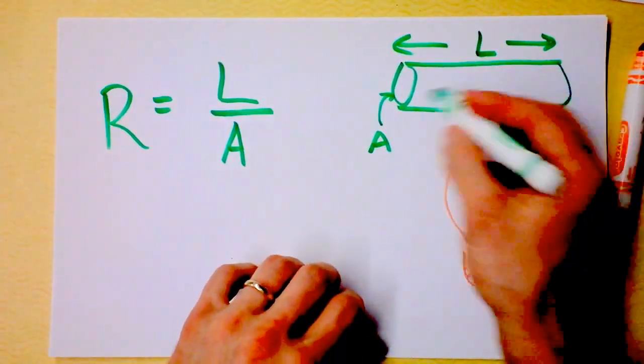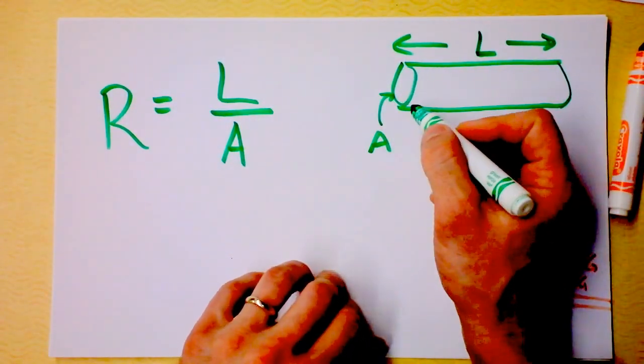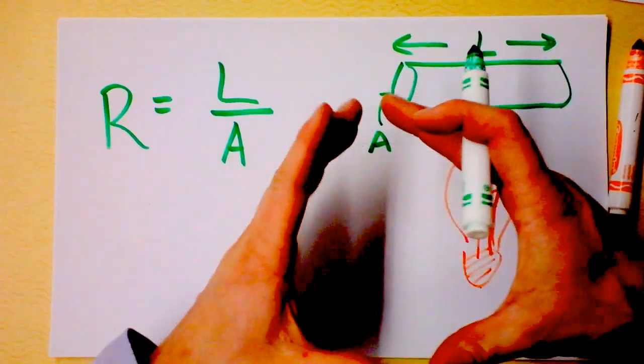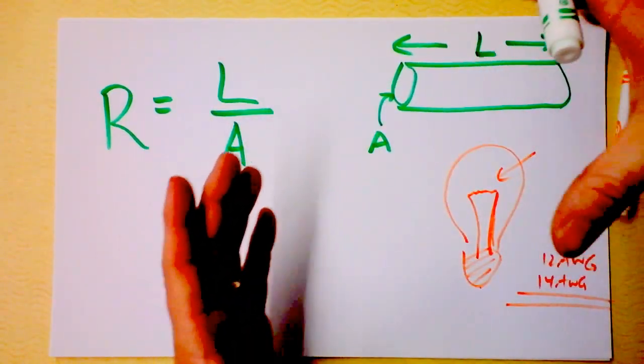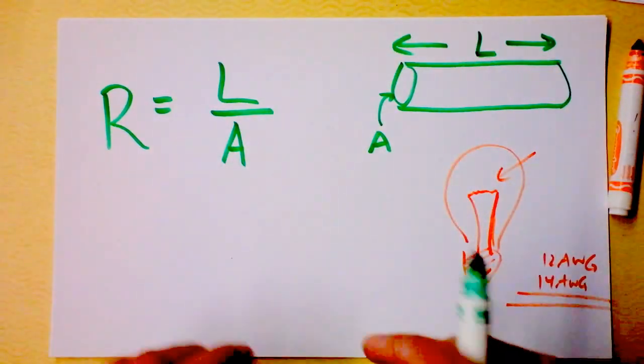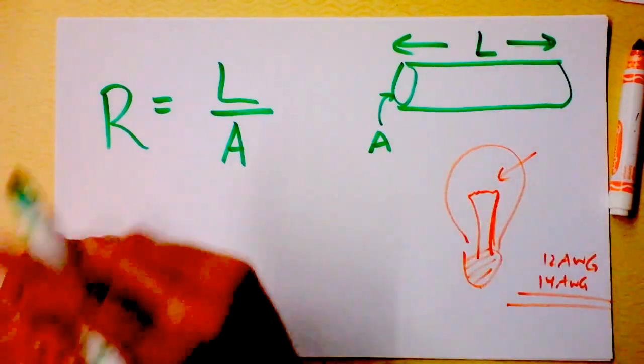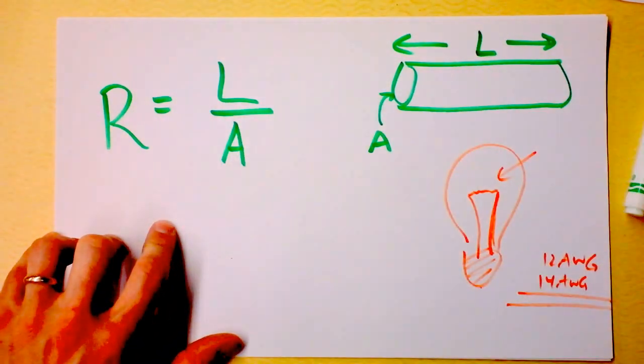You can sort of look at it like opening up more lanes on the highway. If you've got a larger path through which the electricity can travel then more of it will be able to more easily travel. I want to define one constant right here and that's going to be ρ (rho), not a density but a resistivity.